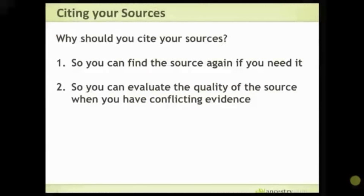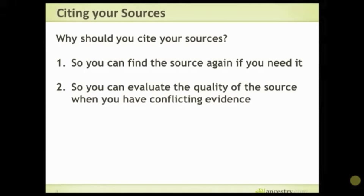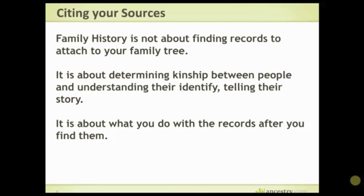So let's get started. Why should you cite your sources? So you can find the source again if you need it, and so you can evaluate the quality of a source when you have conflicting evidence. If you're looking at a birth date and one is from a death record and the other is from a marriage record, the birth date may be more correct on a marriage record because that information probably came from the actual person or someone who knew them. The death record you don't really know who it came from. By looking at the record it will help you feel which one is right.